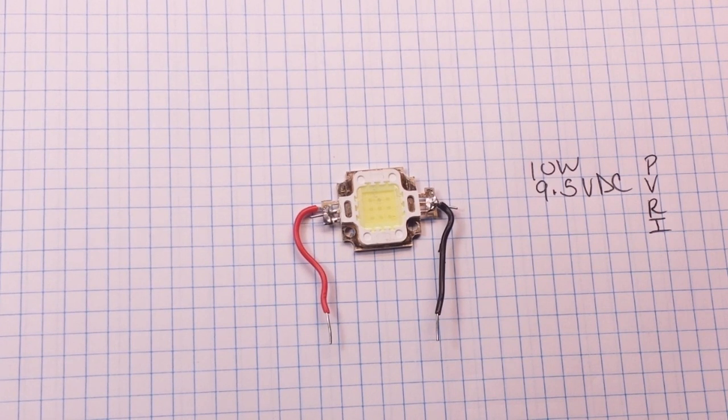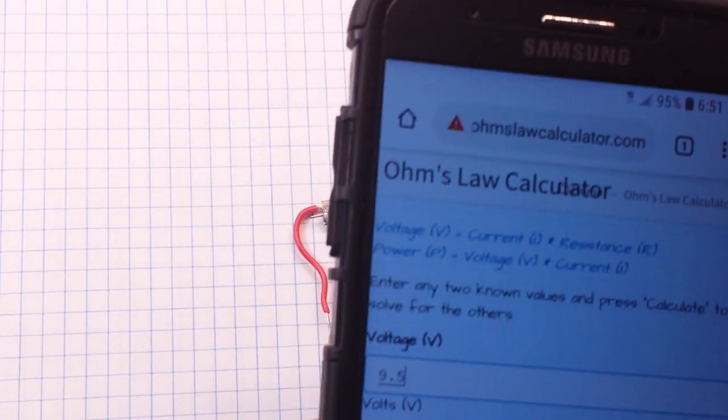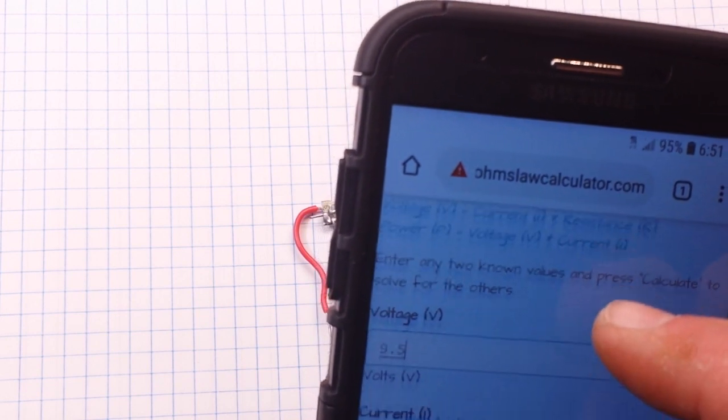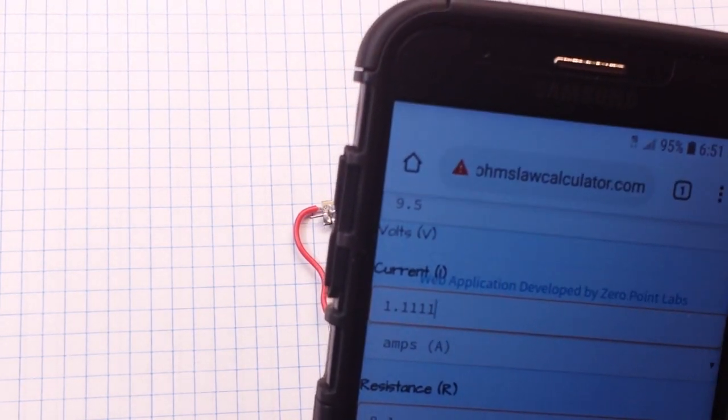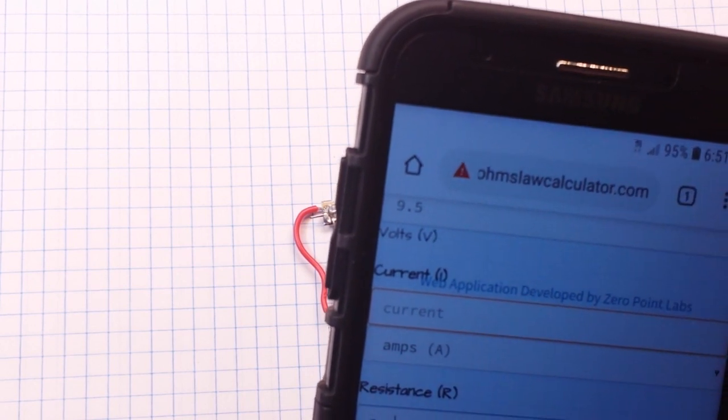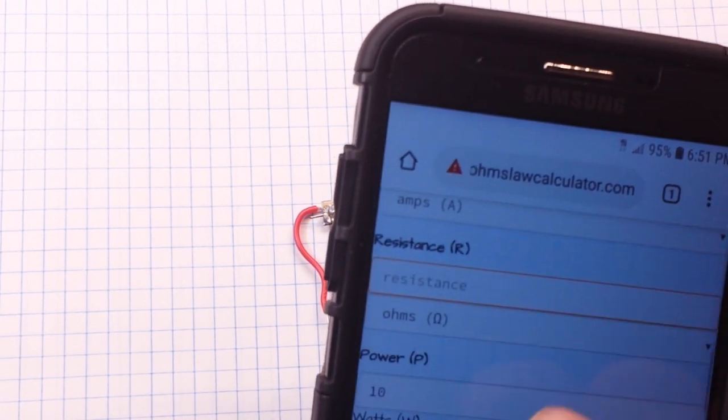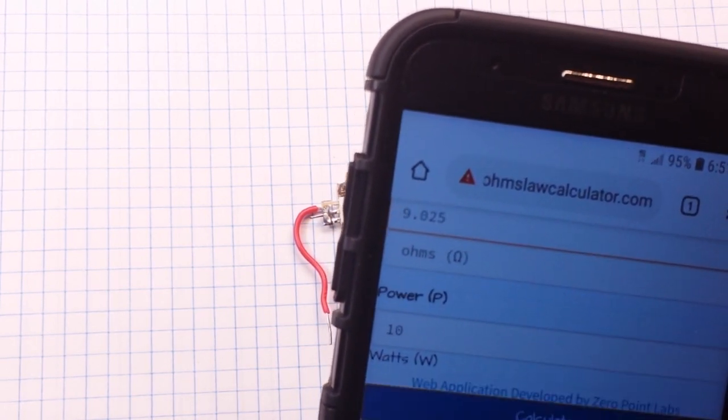So a simple Ohm's Law Calculator will allow us to come in here. I got an Ohm's Law Calculator here. Nine volts, we're going to clear all this out. 9.5 volts at 10 watts. Calculate,